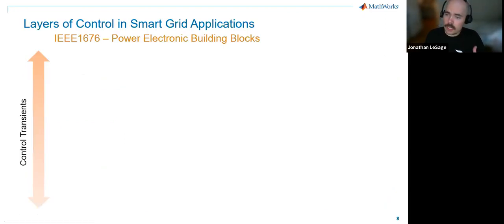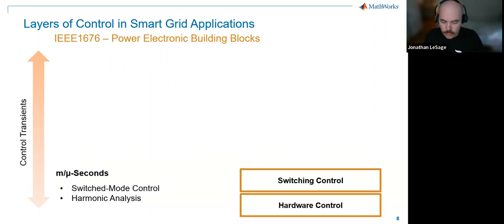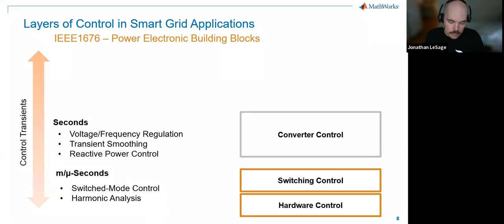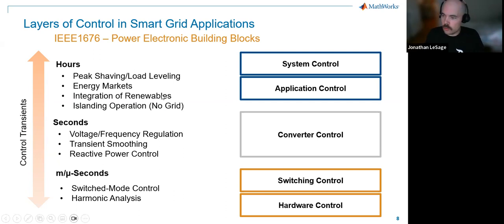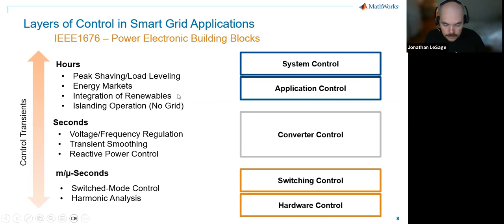As the utility landscape continues to change, we're seeing more and more power electronics-based, inverter-based resources in the grid. When developing these systems, there are layers of control tasks: low-level switch-mode control, converter control including grid forming, and longer-term energy management and optimization — factoring in forecasts from weather data or demand. Building a model that addresses all these pieces and lets you select the mode of interest is something we've seen a lot of interest in.